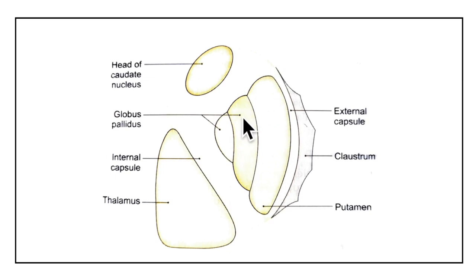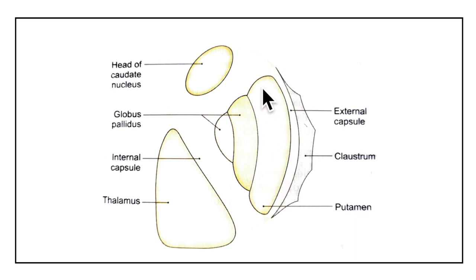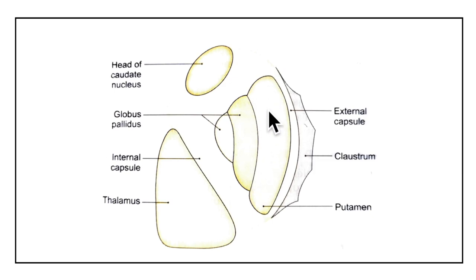Now let us learn about the lentiform nucleus. It is a large lens-shaped nucleus; it is biconvex — convex on both sides — and it forms the lateral boundary of the internal capsule. The lentiform nucleus has three surfaces: a lateral surface, a medial surface, and an inferior surface.